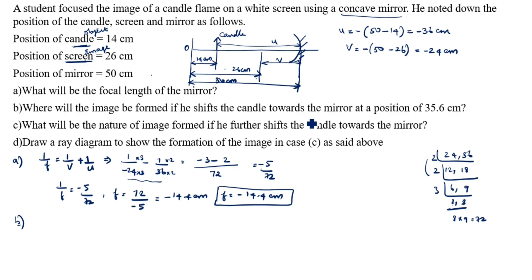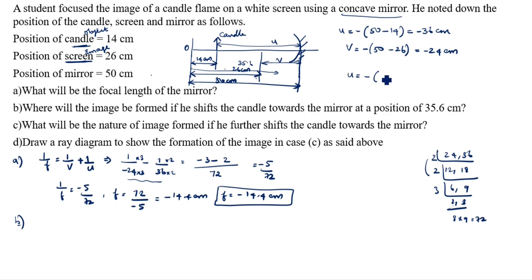For part (b): where will the image be formed if he shifts the candle towards the mirror to the position of 35.6 centimeters? The candle was previously at 14 cm and now shifts to 35.6 cm. The new u value is: u = minus of (50 minus 35.6) = minus 14.4 centimeters.